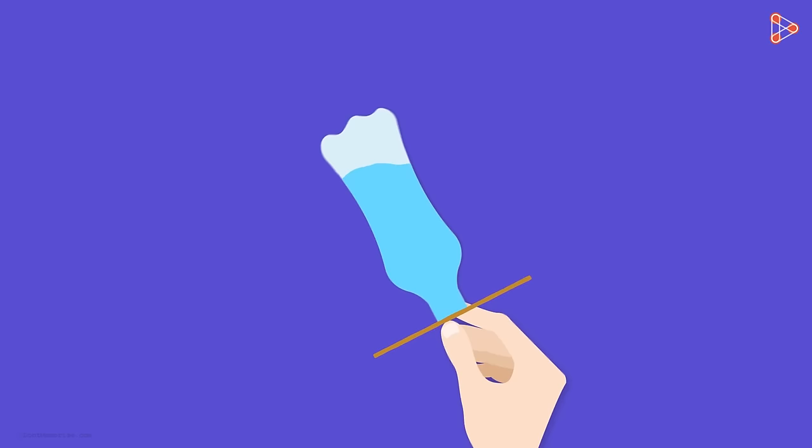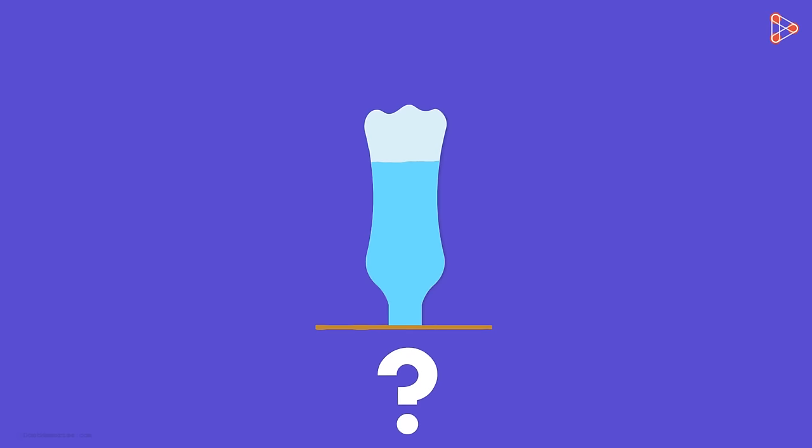Let us do an experiment to see how heavy the air is. Take a bottle filled with water. Now take a piece of cardboard and place it on the open end of the bottle. Hold the cardboard with your hand and invert the bottle upside down. Now take off your hand from the cardboard. What did you see?